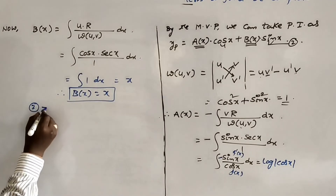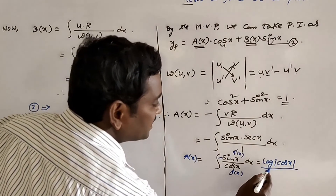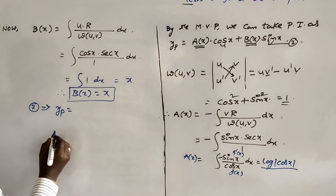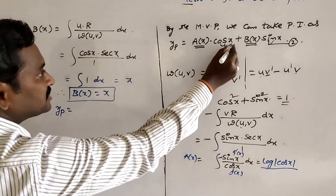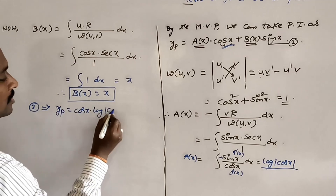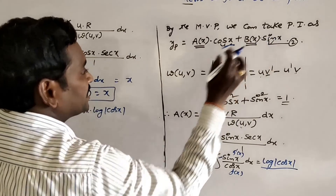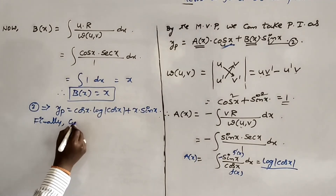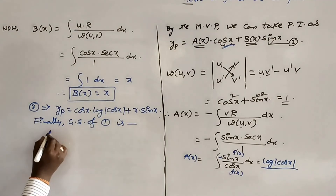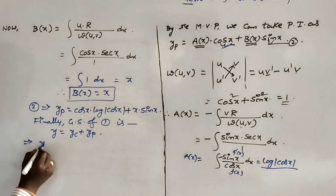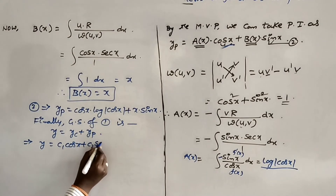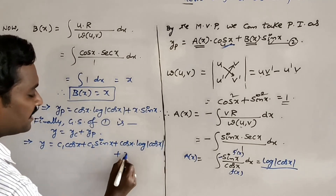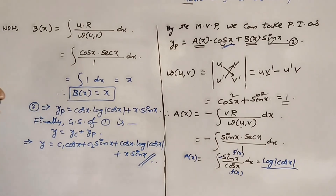From equation 2, substituting a(x) = log|cos(x)| and b(x) = x, we get: yp = cos(x)·log|cos(x)| + x·sin(x). The general (complete) solution of the given differential equation is y = yc + yp = c1·cos(x) + c2·sin(x) + cos(x)·log|cos(x)| + x·sin(x). This is the complete solution.